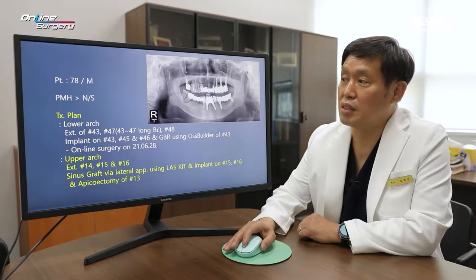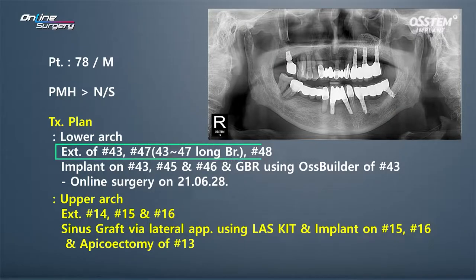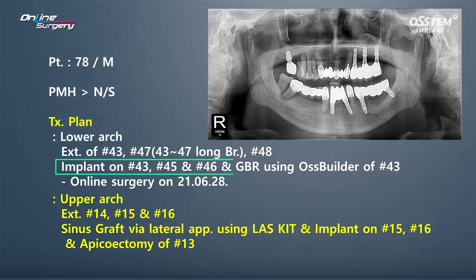The treatment plan was to remove the long bridge spanning from number 43 to 47. Extraction for number 48 was planned as well. Three implants were to be placed, especially in number 43. OzBuilder will be used for GBR.